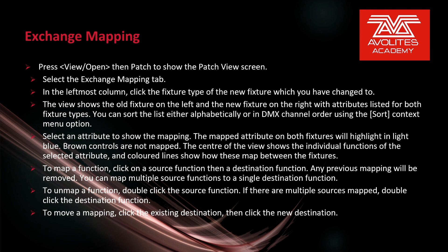Select an attribute to show the mapping. The mapped attribute on both fixtures will highlight in light blue. Brown controls are not mapped. The center of the view shows the individual functions of the selected attribute, and the color lines show how these map between the fixtures.